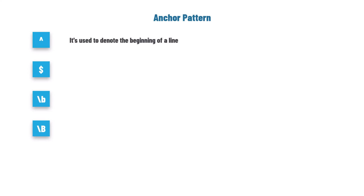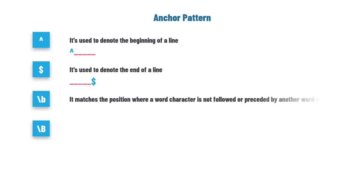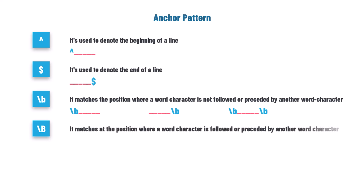Let's summarize the anchor patterns. Caret symbol: denotes beginning of line, used before the pattern. Dollar sign: denotes end of line, used after the pattern. Word boundary \b: matches where a word character is not followed or preceded by another word character; can be used before, after, or both sides of the pattern. Non-word boundary \B: matches where a word character is followed or preceded by another word character; also used before, after, or both sides.